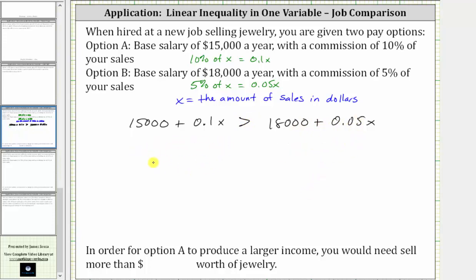The first step is to add or subtract to isolate the variable terms on one side. Notice right now we have x terms on both sides. Let's begin by subtracting 0.05x on both sides. Notice now the x terms are going to be on the left side. Let's also undo the positive 15,000 here on the left by subtracting 15,000 on both sides.